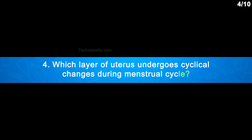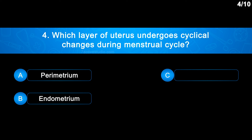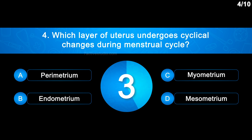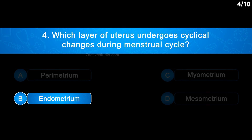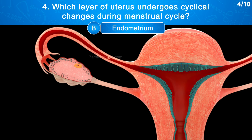Question No. 4: Which layer of the uterus undergoes cyclical changes during the menstrual cycle? Option A: Perimetrium, Option B: Endometrium, Option C: Myometrium, Option D: Mesometrium. The correct answer is Option B: Endometrium. The glandular endometrium undergoes cyclical changes during the menstrual cycle.